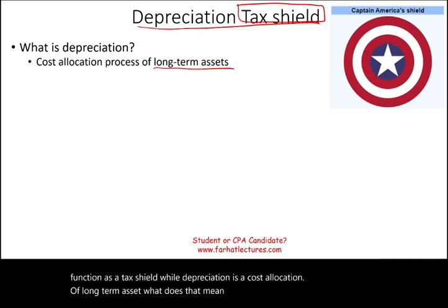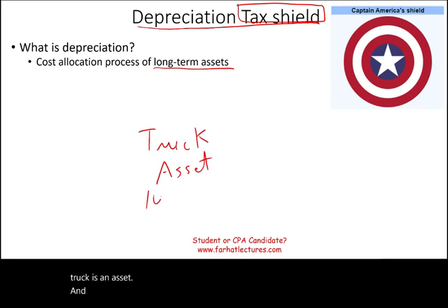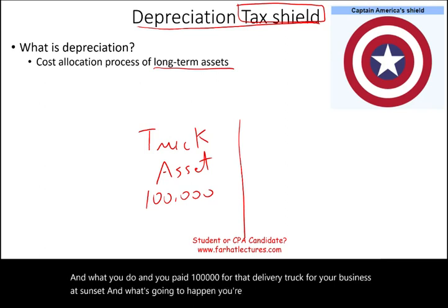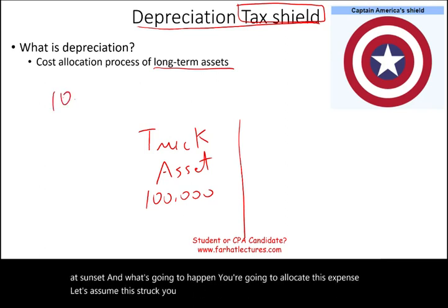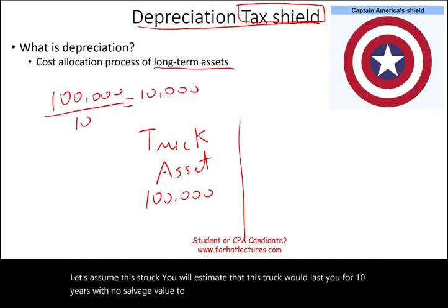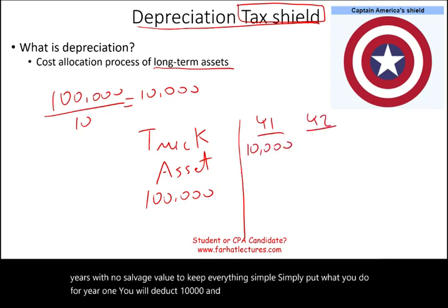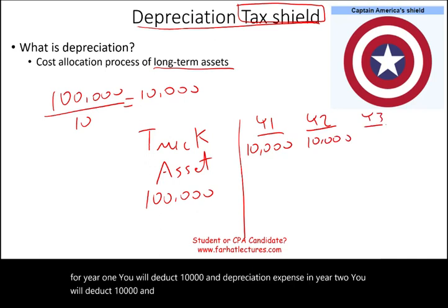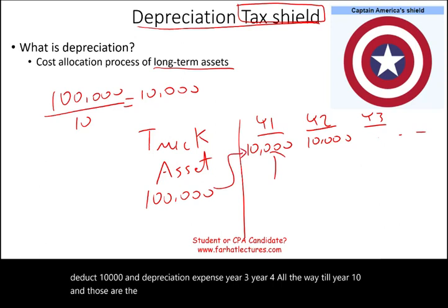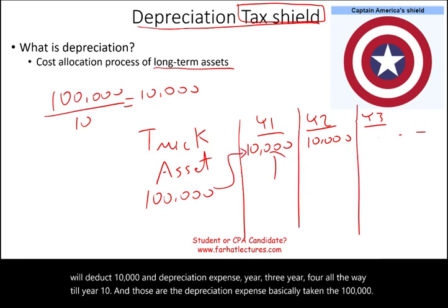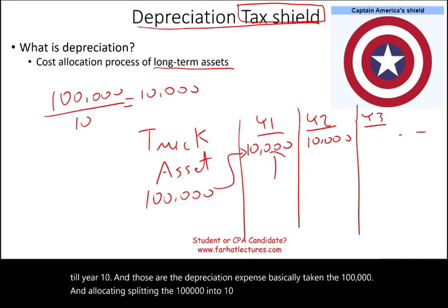For example, you buy a truck — that truck is an asset. Let's say you paid $100,000 for that delivery truck for your business. You're going to allocate this expense over time. Assuming this truck will last 10 years with no salvage value, in year one you deduct $10,000 in depreciation expense, in year two another $10,000, and so on all the way through year 10 — splitting the $100,000 into $10,000 of depreciation expense per year.